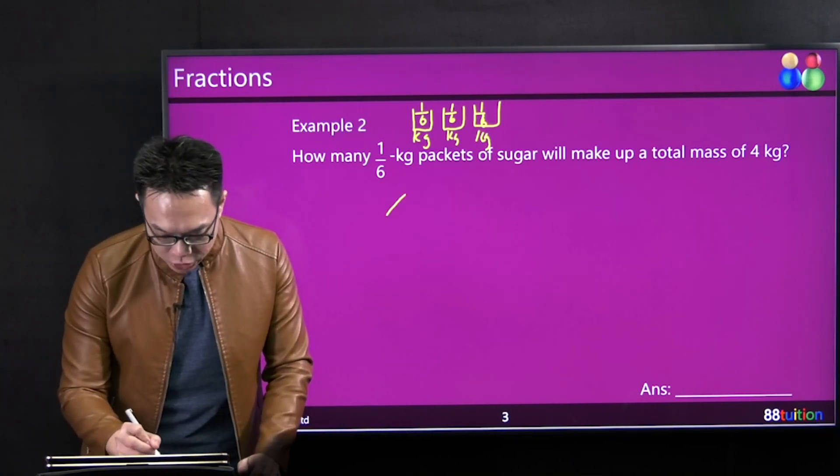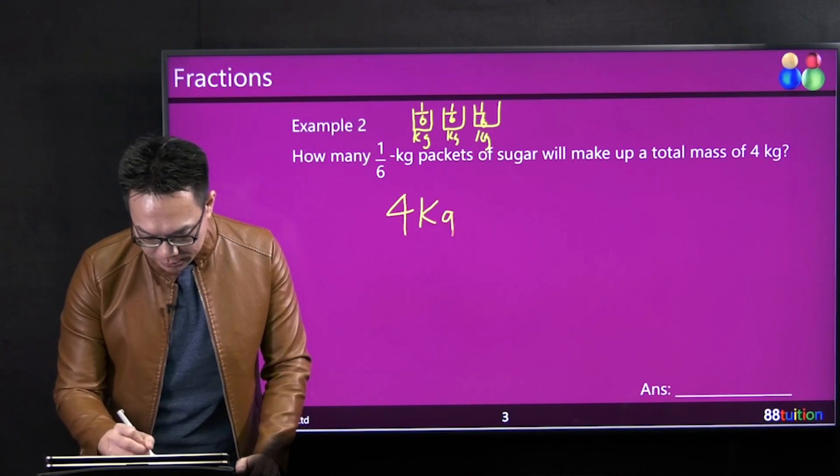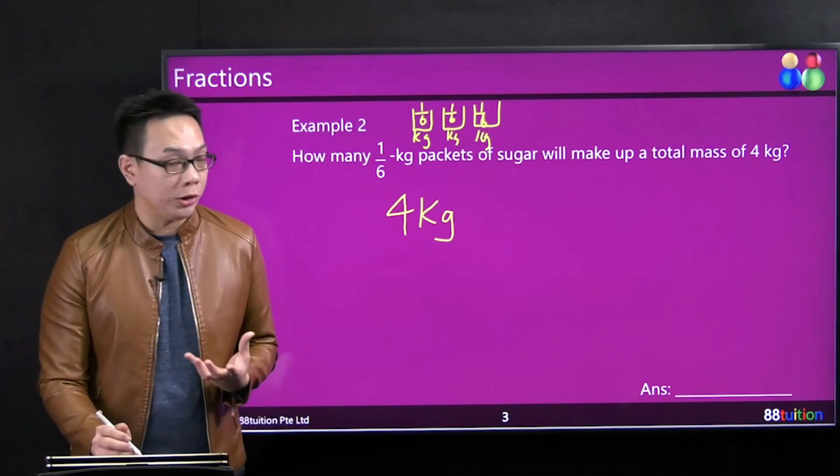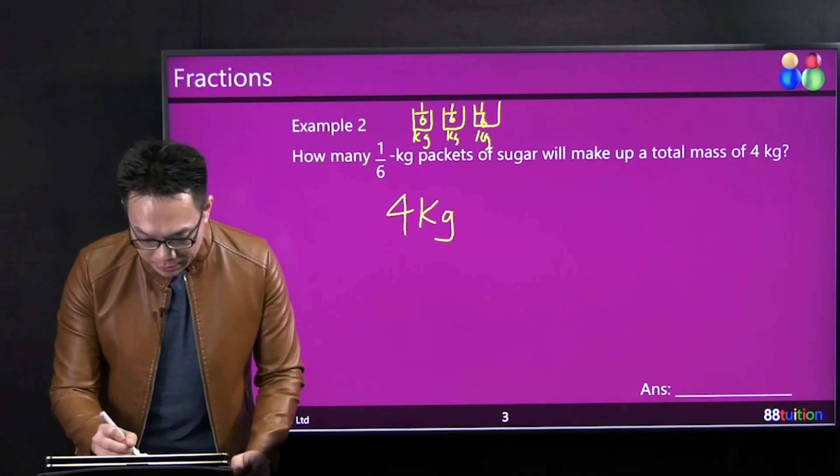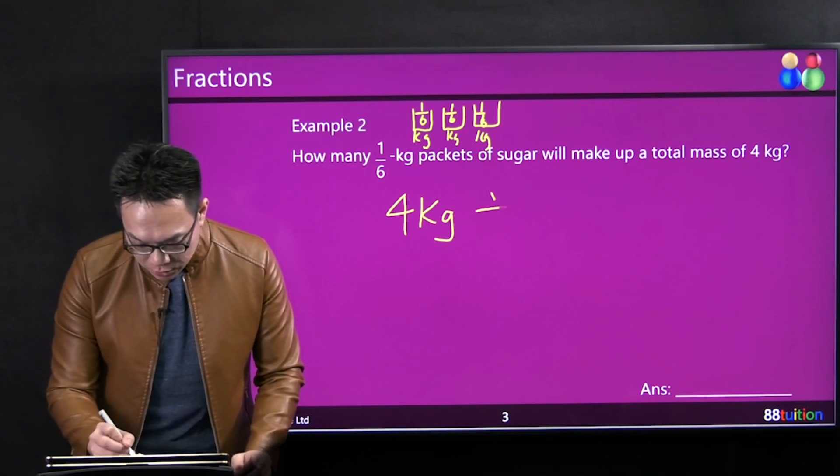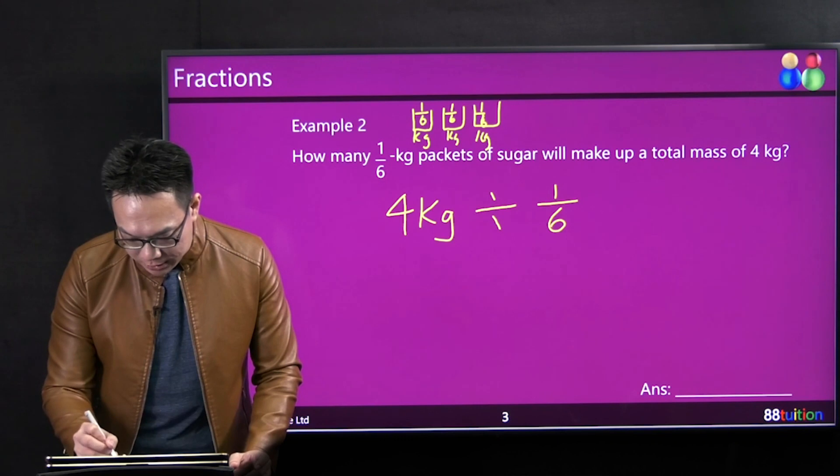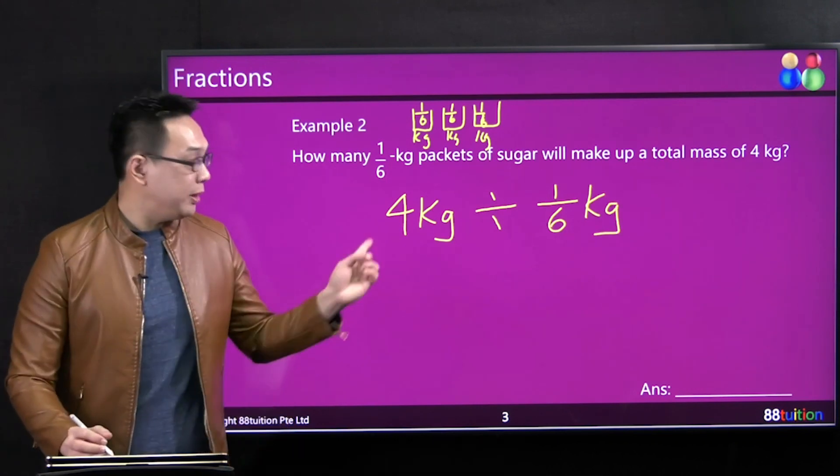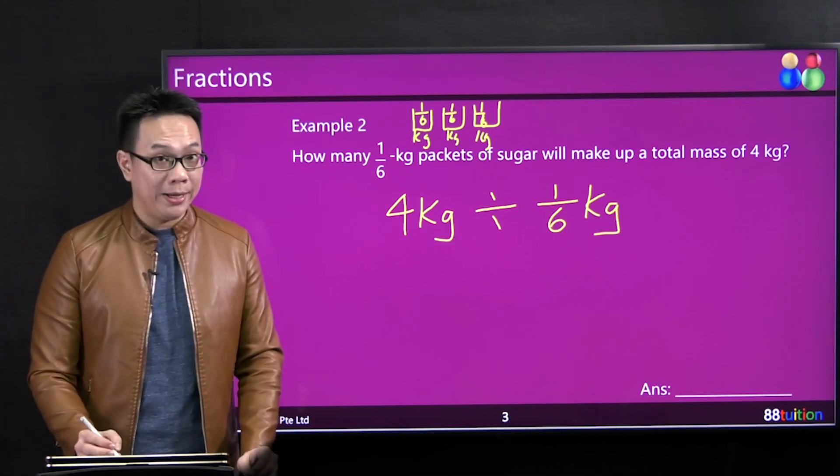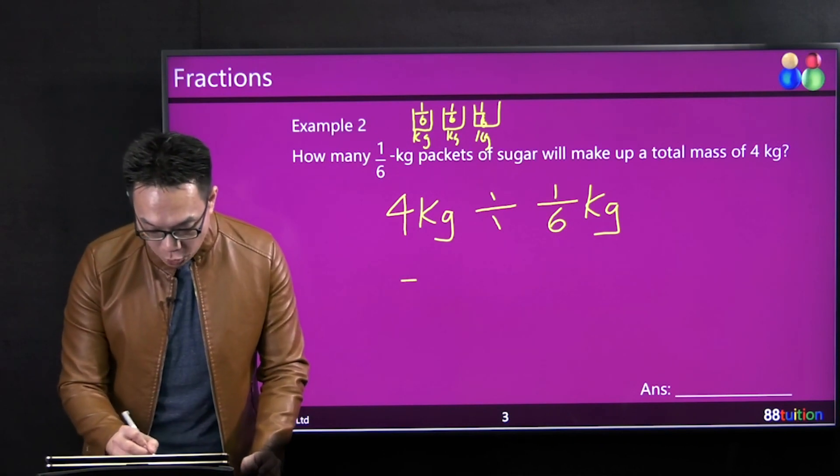You take 4 kg - that's the total that you need. You want to find out how many packets, right? Divide by each packet which is 1/6 kg. Put in the units: kg divided by kg. So what will happen?